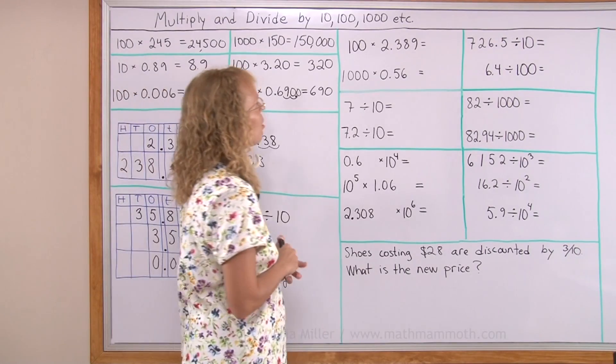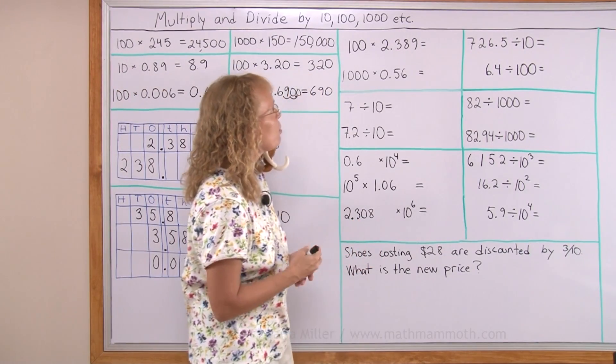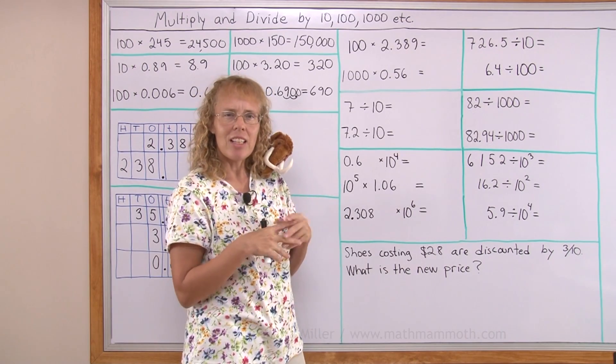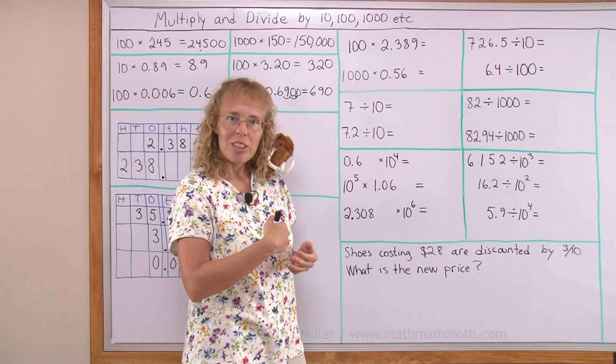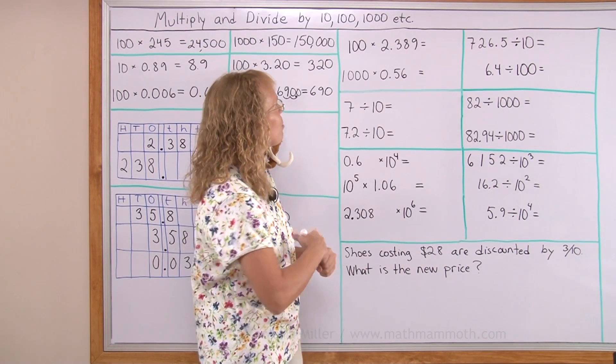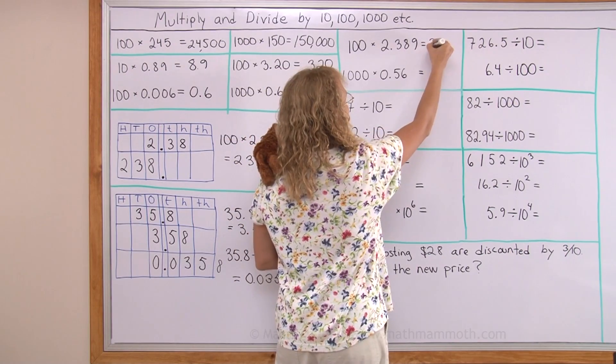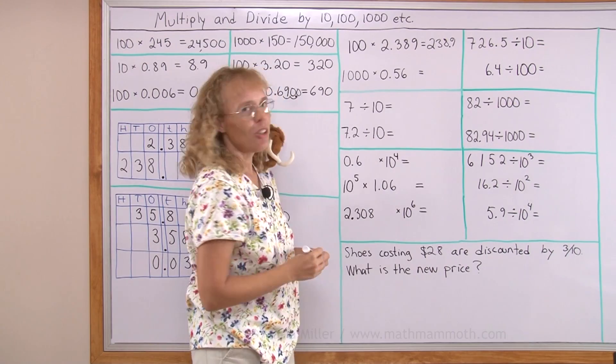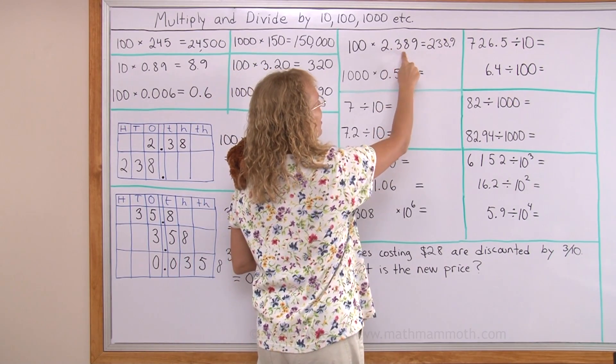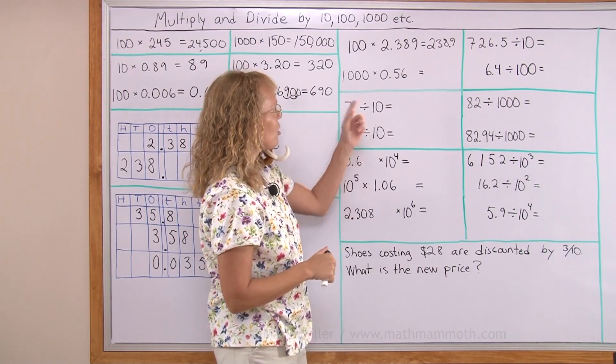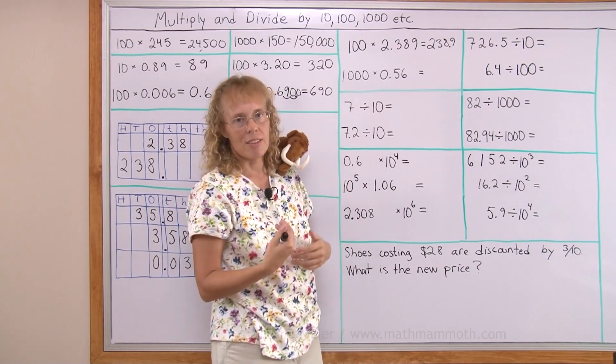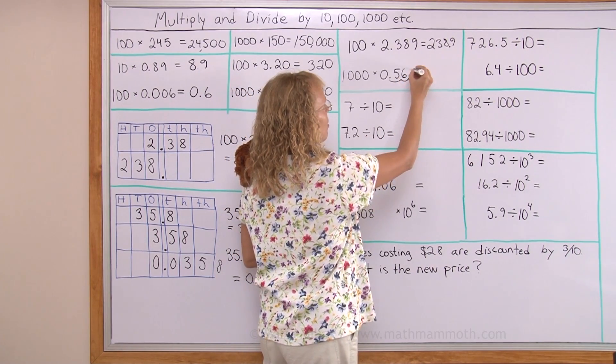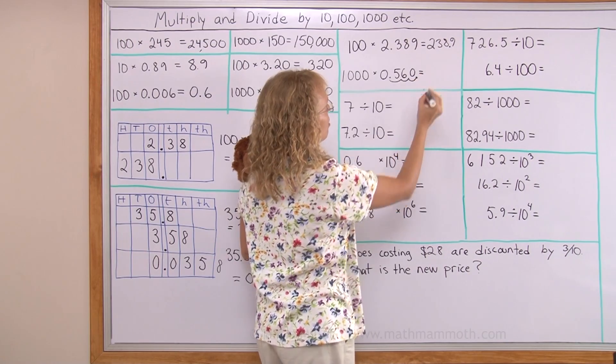Now let's go on, do a few more problems. 100 times 2.389. I can think of it in two ways. Because it is 2 point, it's easy. I could think that 100 times 2, 100 times 2 is 200. So if I put 2 in the hundreds place, then all the other digits follow like that. Or you can think of moving a decimal point here two steps, right there. 1000 times 56 hundredths. I'll move the decimal point three steps here and here and one more. I have to put a zero there. It would go 560.